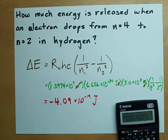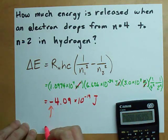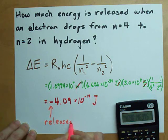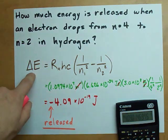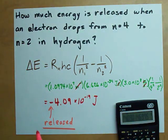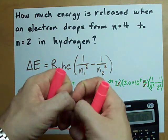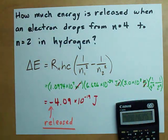Pop quiz, what's the negative for? The negative is only there because the light is being released. This is the change in energy. The light is being released, the photon is going out of the atom to your eyes. And that's why it's negative. Best of luck!